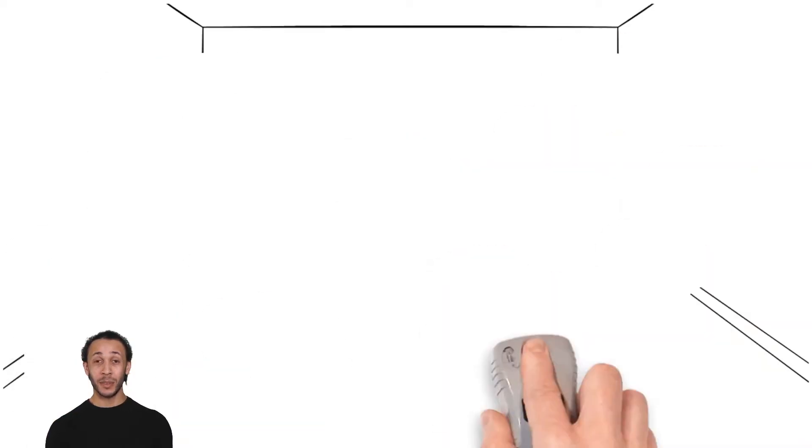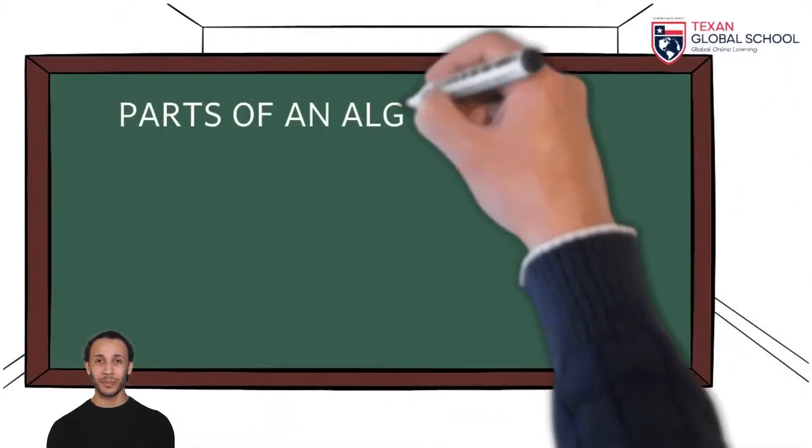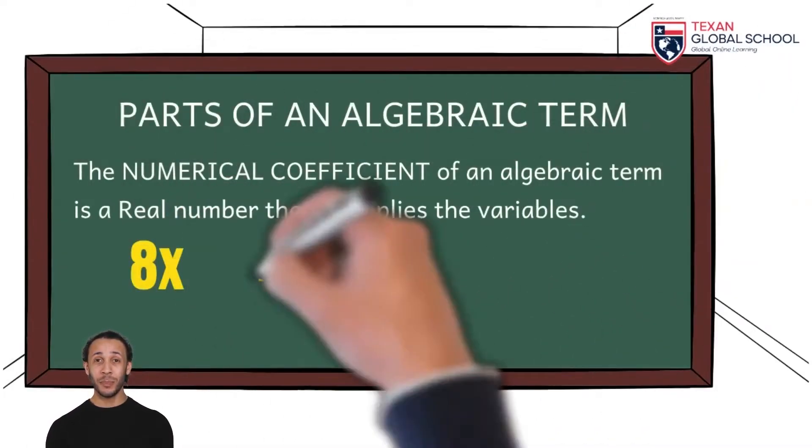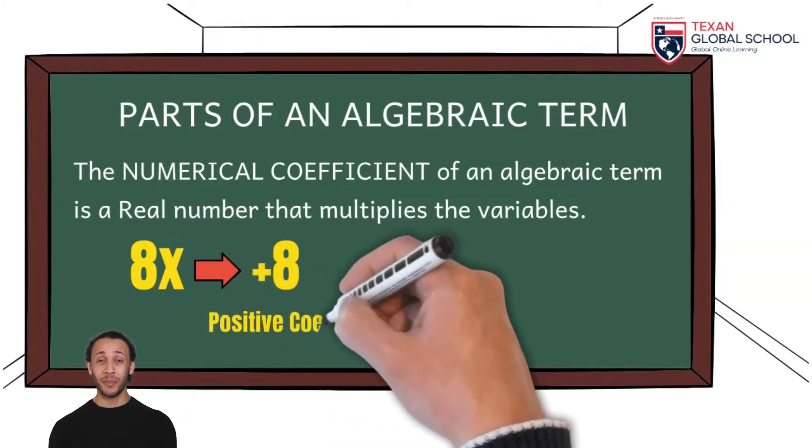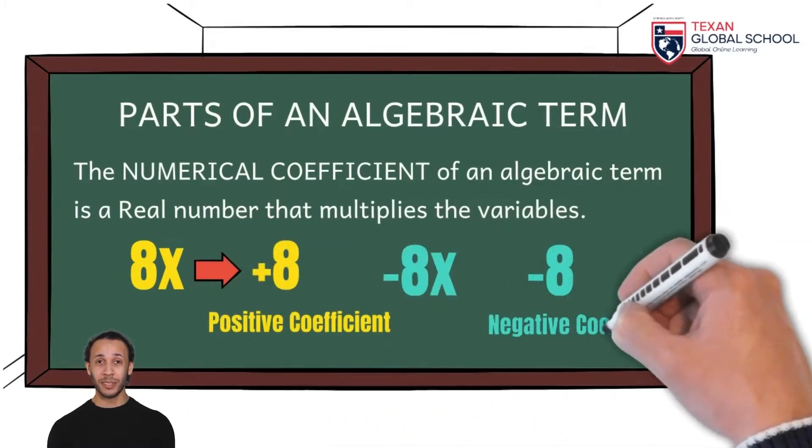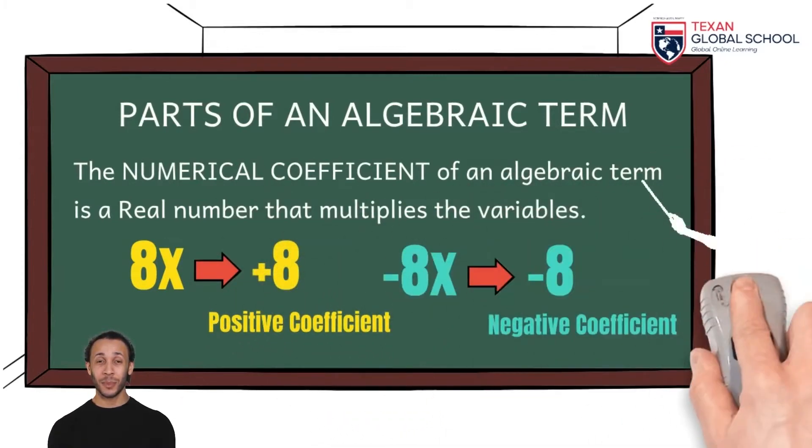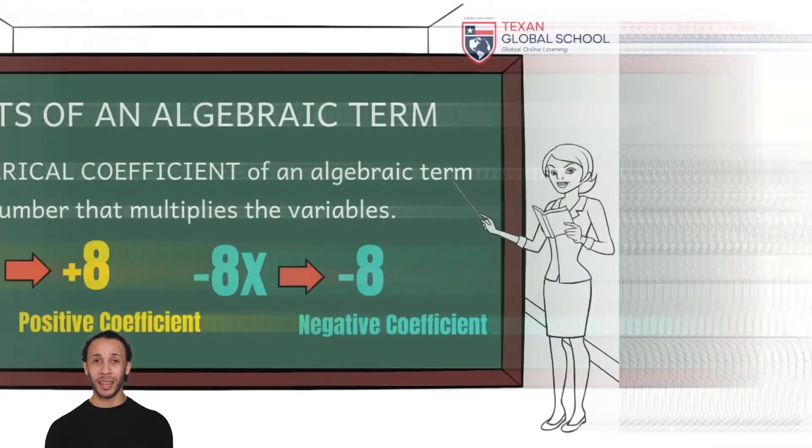We will now analyze the parts of an algebraic term. The first part is called numerical coefficient, which is any real number that multiplies the variables. For example, the first term's numerical coefficient is 8, and the second is negative 8.